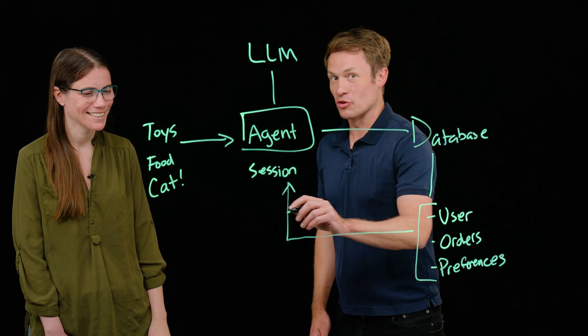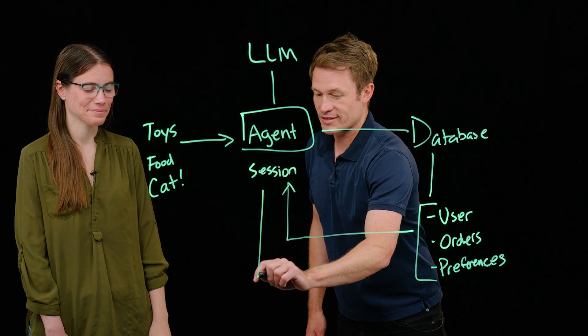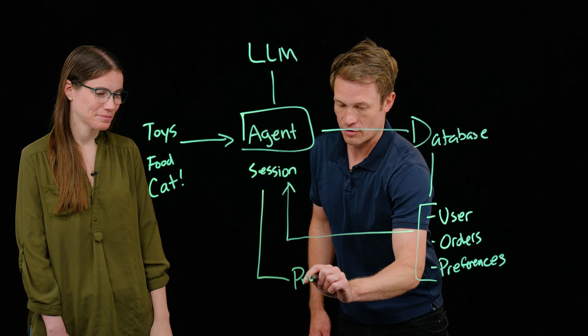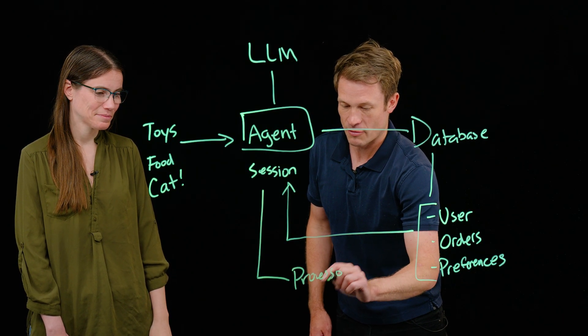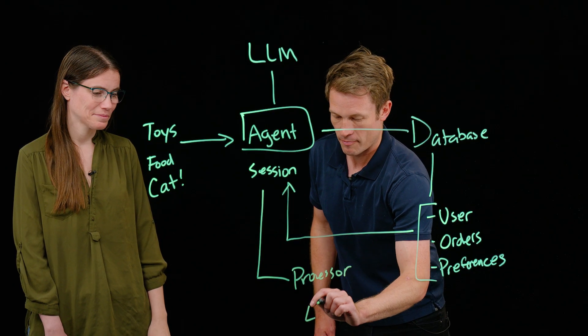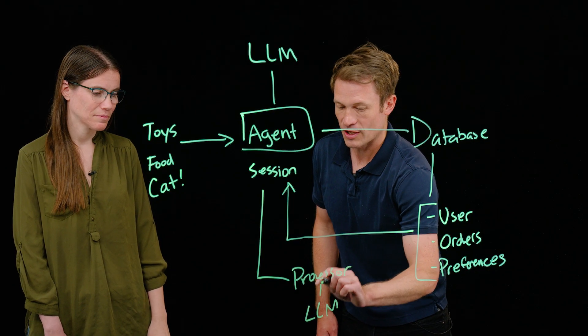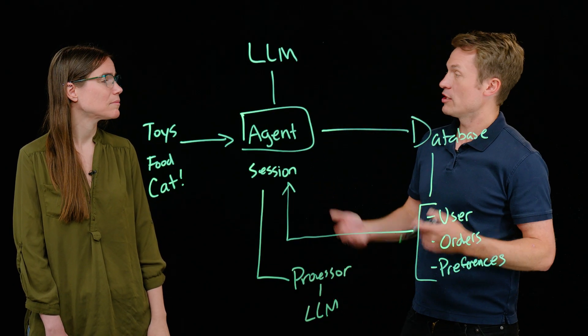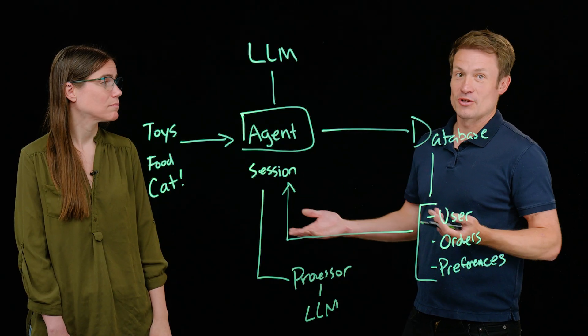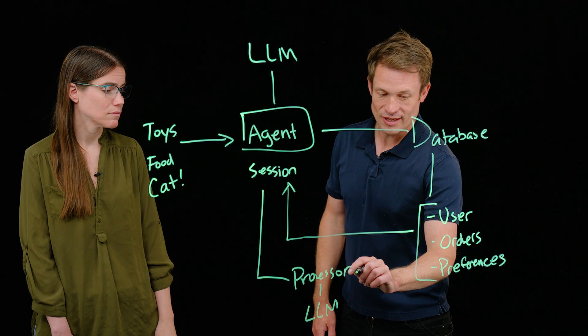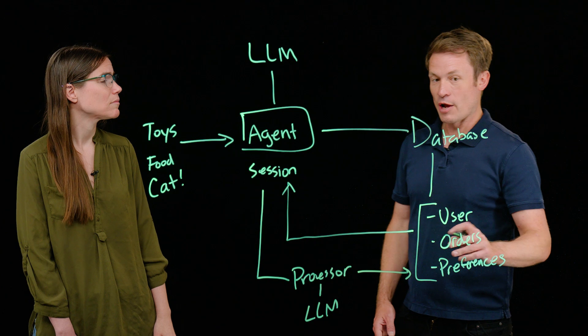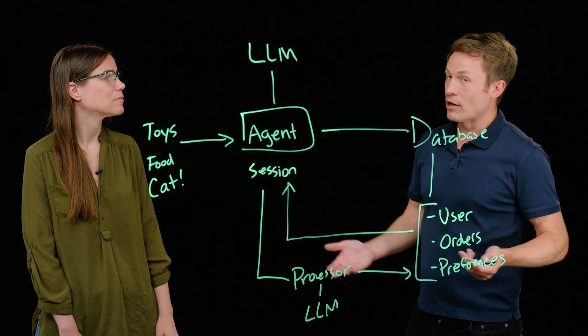So this is where we're going to actually do something with our short-term memory and our long-term memory. What we want to do is essentially when our session's over, we want to send this information to a processor. And this processor may actually use an LLM to help summarize that information about any new points. In this case, that you got a new cat.